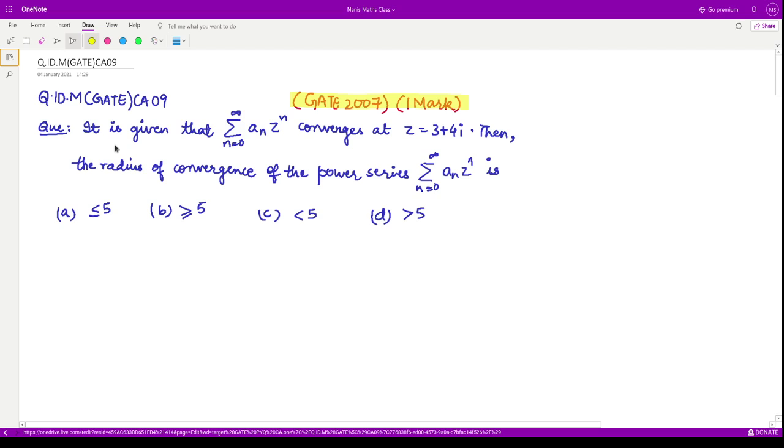The question says, it is given that summation n varying from 0 to infinity a_n z raised to power n converges at z equals 3 plus 4 iota. Then they are asking the radius of convergence of the power series is which of these four. So this is a very simple question if you know the definition of radius of convergence.